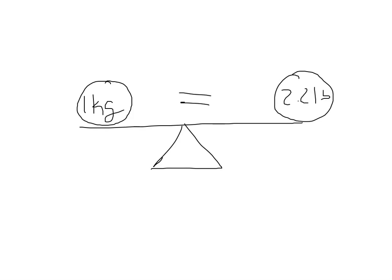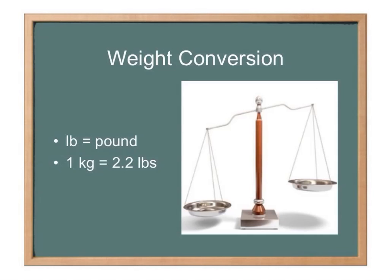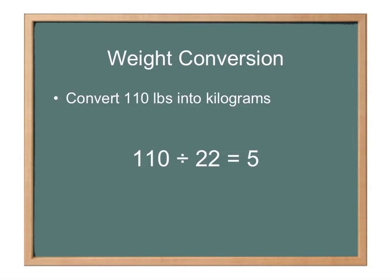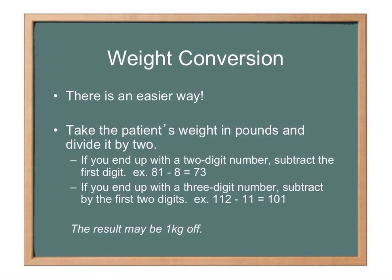In Europe they use kilograms; here in the States we say pounds, so you've got to be able to convert. Since every kilogram equals 2.2 pounds, to convert 110 pounds into kilograms you divide by 2.2. To avoid decimals, divide 110 by 22 instead — that equals 5. Then add back the decimal place and you get 50. So 110 pounds is equal to 50 kilograms. But not every number divides by 22 as easily.